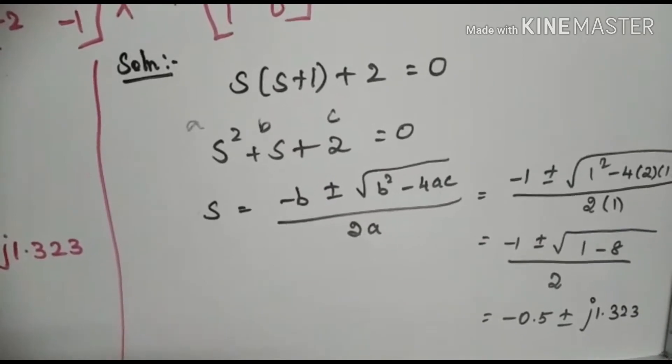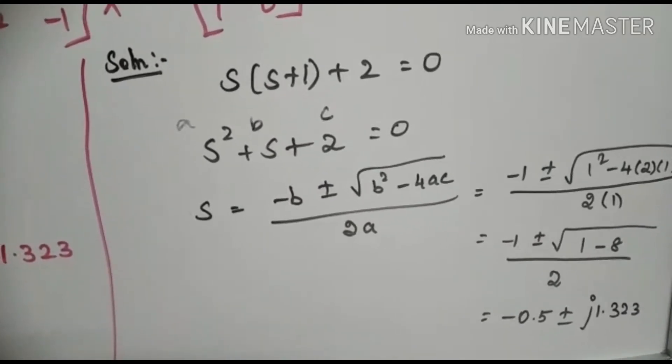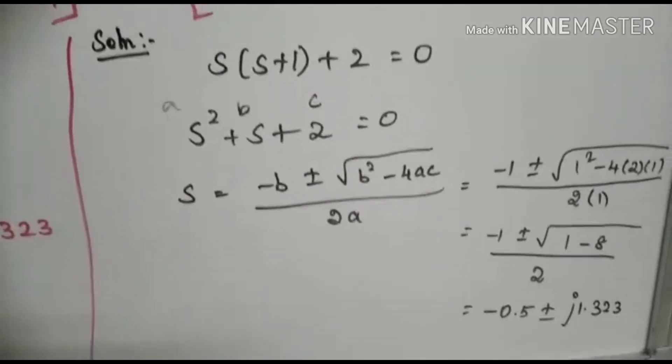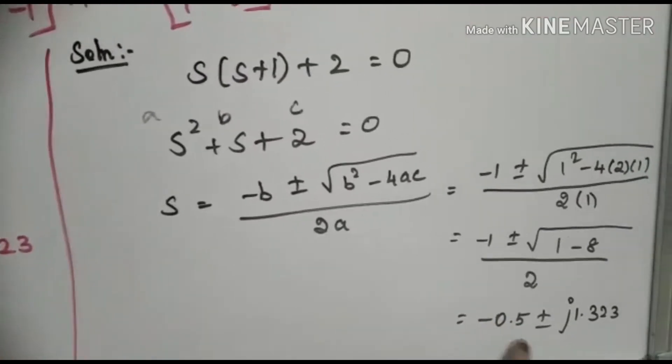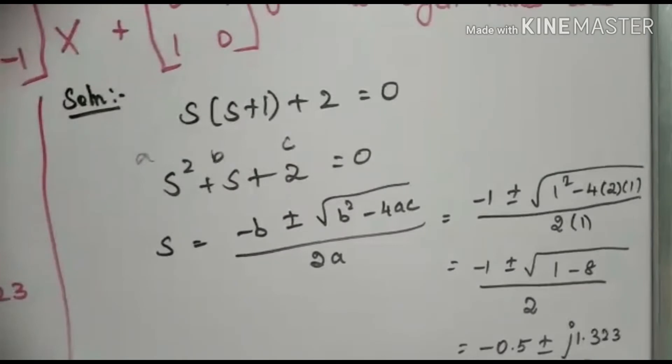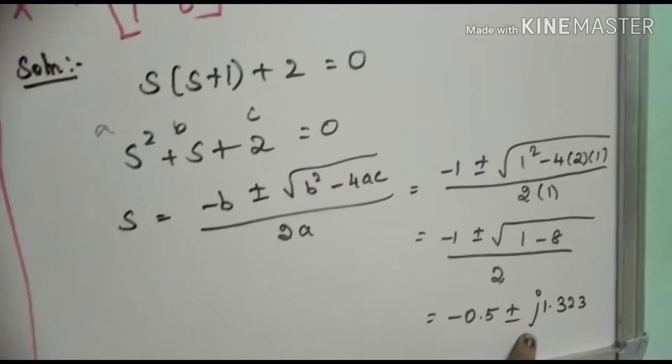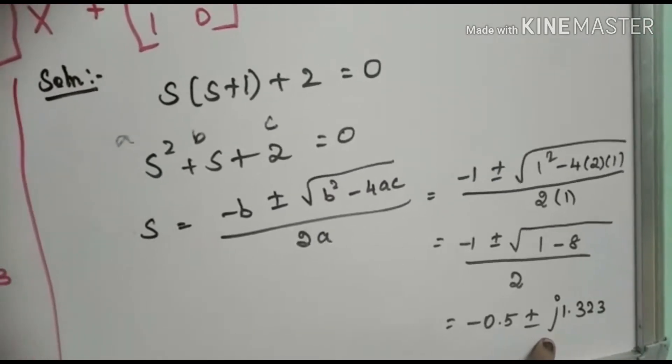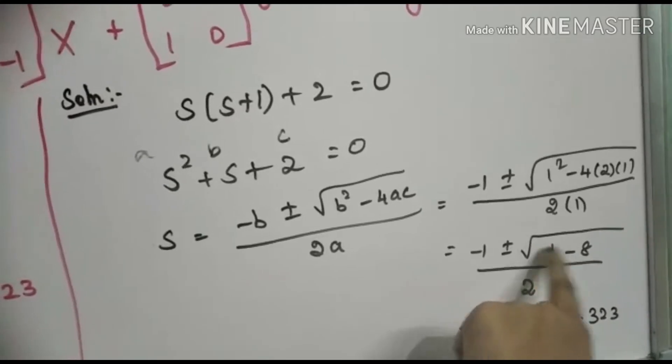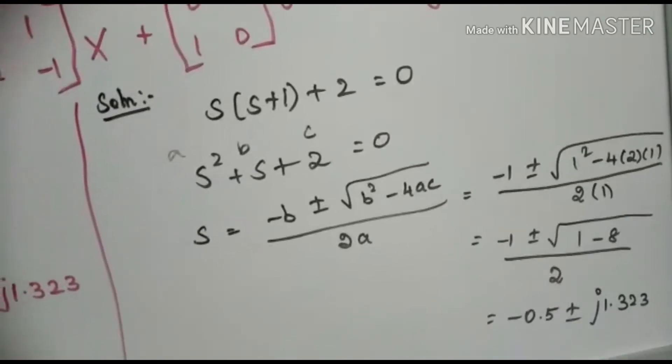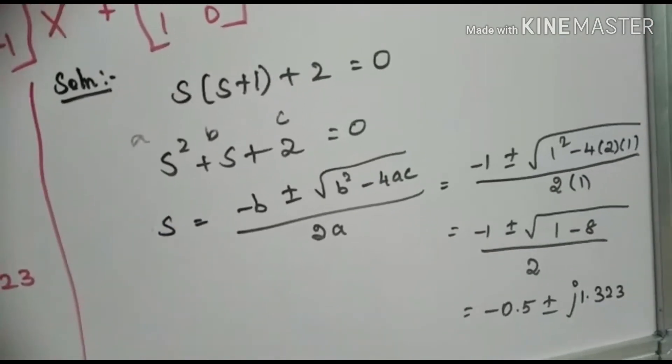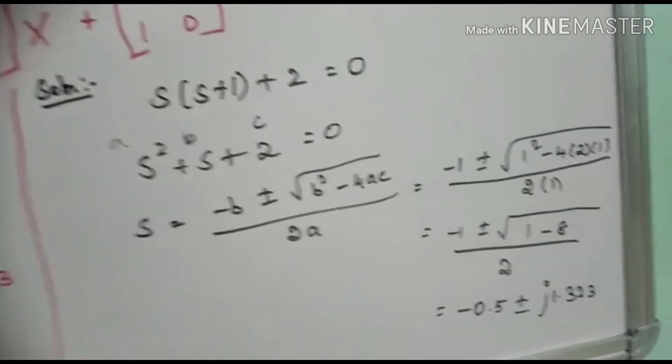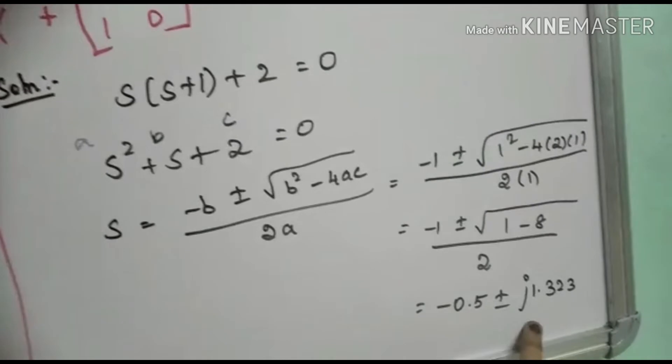So minus 1 plus or minus root of 1 minus 8 divided by 2. The final answer we are getting is minus 0.5 plus or minus j1.323. Why are we getting j here? That is, imaginary term, because in this root we are getting a negative sign, which equals root of minus 7.